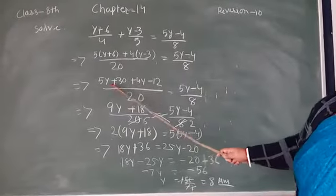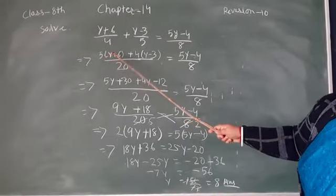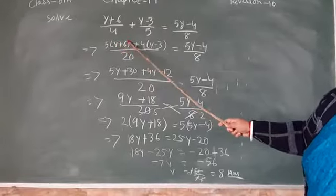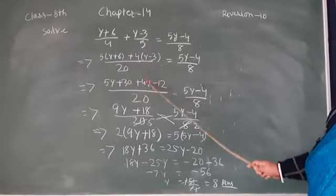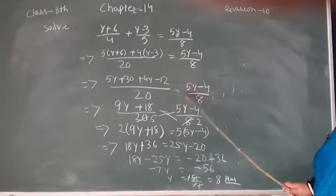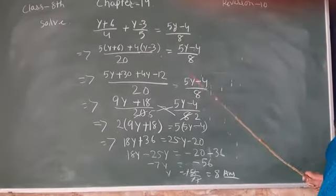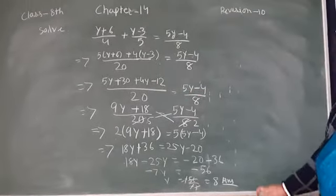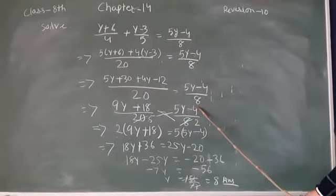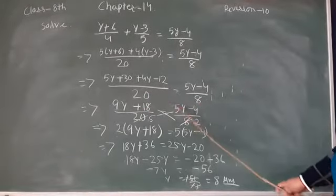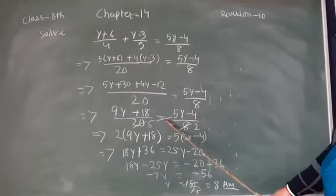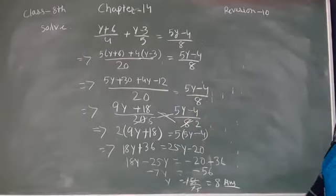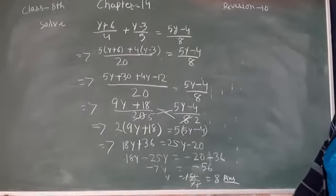So 5 multiplied by y+6, that means 5y+30, plus 4y-12, is equal to (5y-4)/8. See here, 20 and 8, you cut both the numbers by 4, that time you got 5 and 2. It will reduce our calculation.